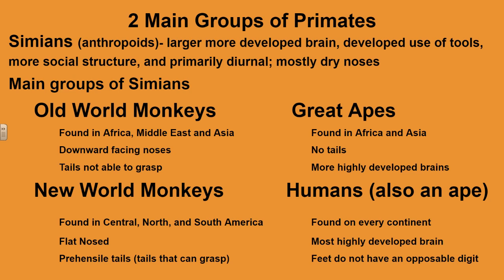Old world monkeys are found in Africa, the Middle East, and Asia. They usually have downward-facing noses and their tails are not able to grasp. Then we have the new world monkeys, which are found in Central, North, and South America. These are more flat-nosed, and a large number of them have prehensile tails — tails that can grasp hold of branches.